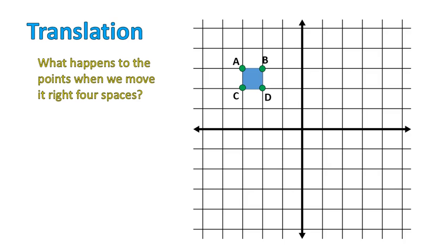Translation is when an object moves from one place to another, so let's take a look at what happens to each of these points, A, B, C, D, when they become A prime, B prime, C prime, and D prime. In other words, when they're moved four spaces to the right.